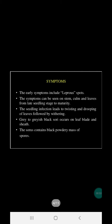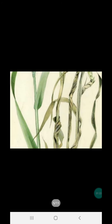Coming to the symptoms of this disease, early symptoms include leaf spots. These spots are grey to greyish black in appearance and occur as sori. Symptoms can be seen on stem, kernel, and leaves from the late seedling stage to maturity. Seedling infection leads to twisting and drooping of leaves, followed by withering. Grey to greyish black sori occur on the leaf blade and sheath, and the sori contain a black powdery mass of spores.